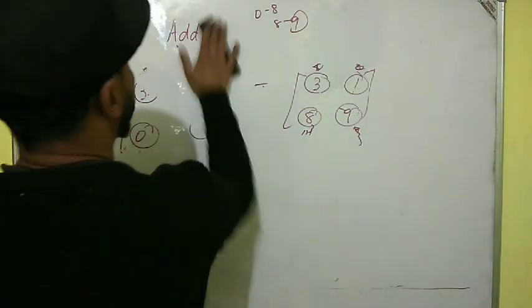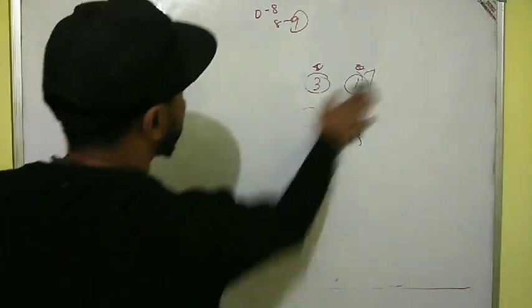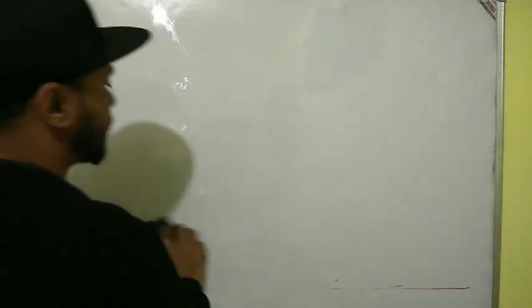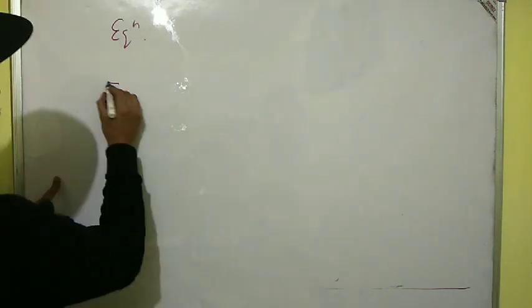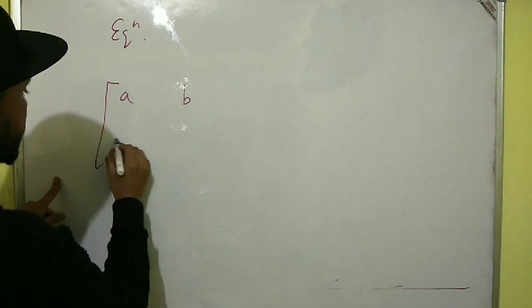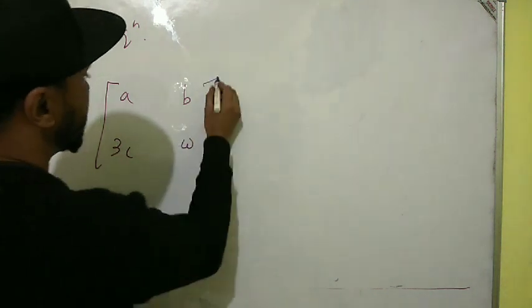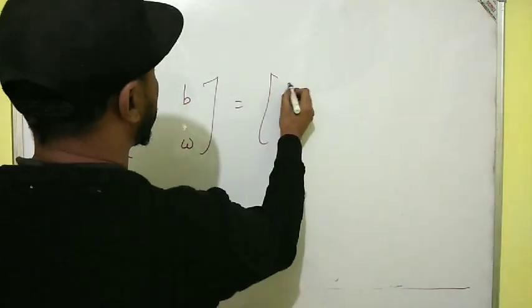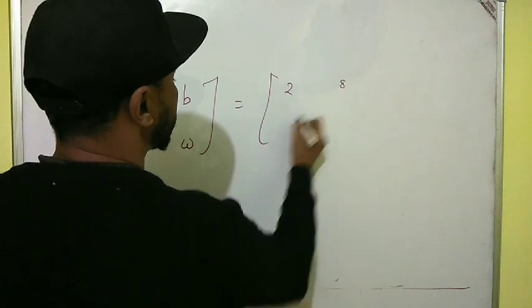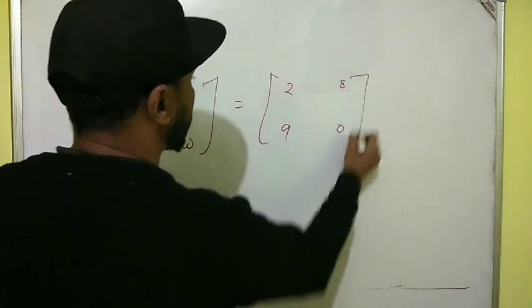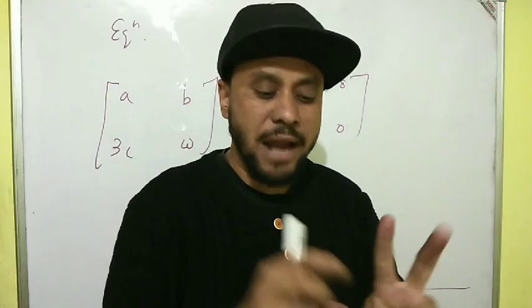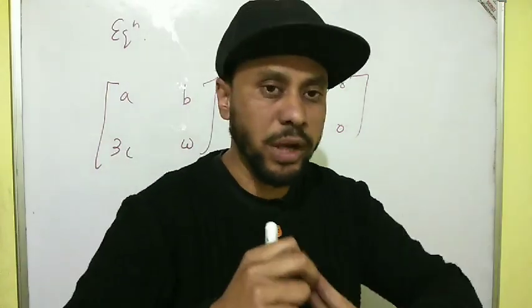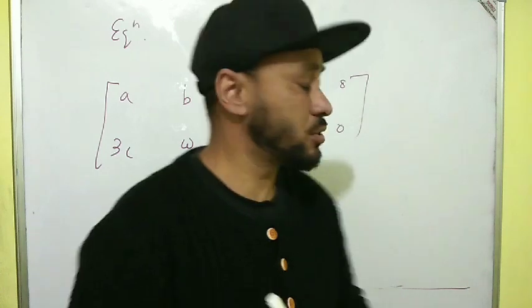Same with equating matrices. Now when you equate two matrices, the order of the matrices has to be the same when you add, subtract, or equate.